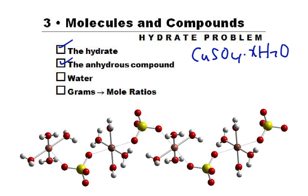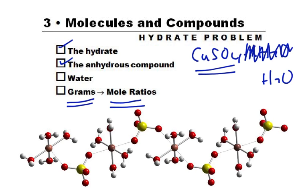The anhydrous compound is if we heat this up and the water goes away, then what we have left over is the anhydrous compound. And then of course there's the water. What we want to do is figure out grams of these and change those into mole ratios so we can figure out what that value of X would be.